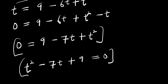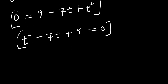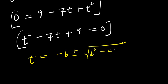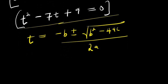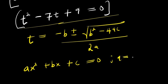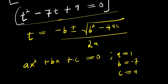This is a quadratic equation that we are going to solve for t. Let's make use of the formula method. We compare this with the general quadratic equation ax² + bx + c = 0. The coefficient of t² — that is our a — is 1, b is -7, and c is 9.